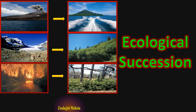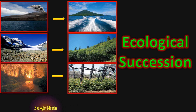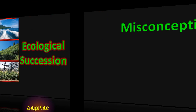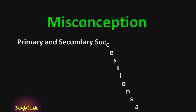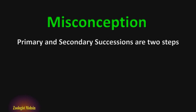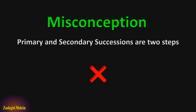In this video we shall learn about pioneer species, primary succession, secondary succession, and their comparison. Most students think that primary and secondary succession occur one after the other, or that they are two steps of succession. But that's a misconception. We'll explore how they differ with respect to conditions of land and timeline.